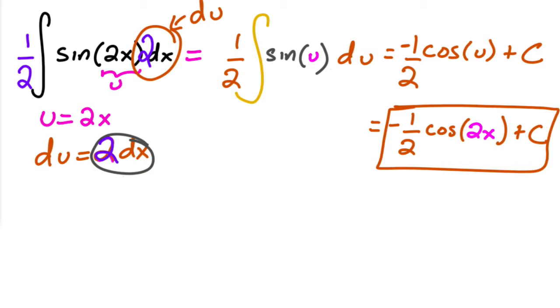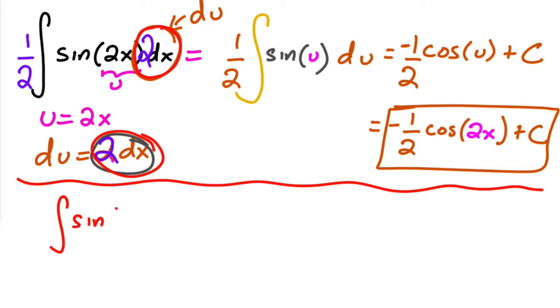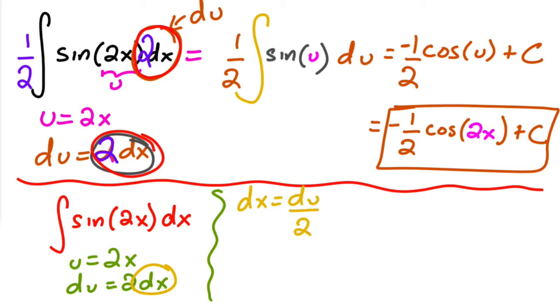Now some students don't really like this part right here, doing the du and looking for the du part. There is another alternative. I don't really like it as much, and I'm not going to be doing it for the rest of the problems. But another option that you can use is what you do is you do the same thing. So u is equal to 2x, and then du is equal to 2 dx. And so then what you do is you solve for dx. And so you say, okay, well, dx is equal to du over 2.